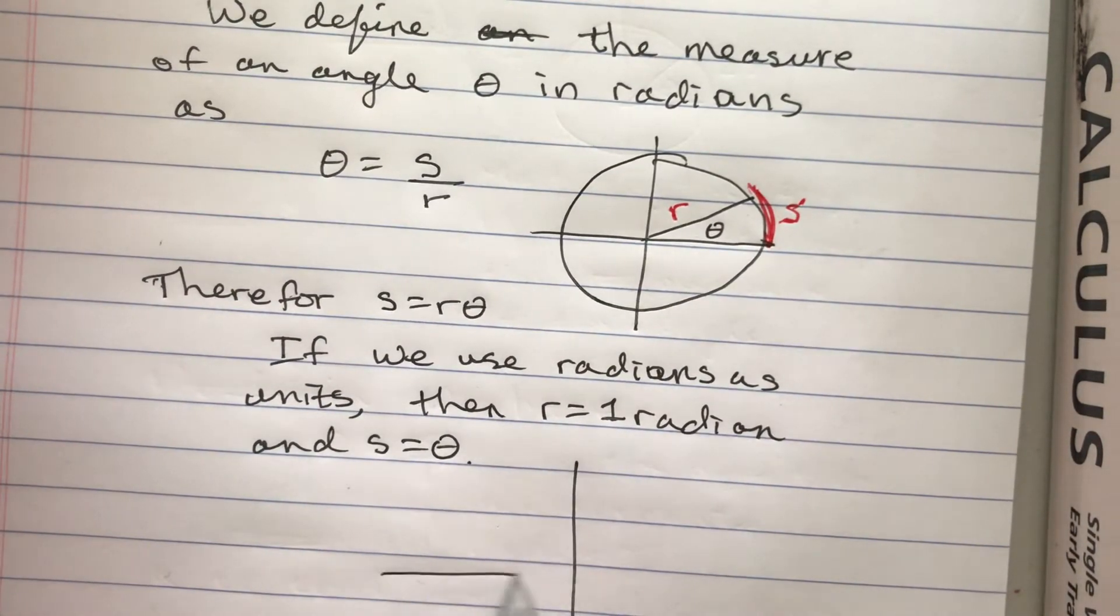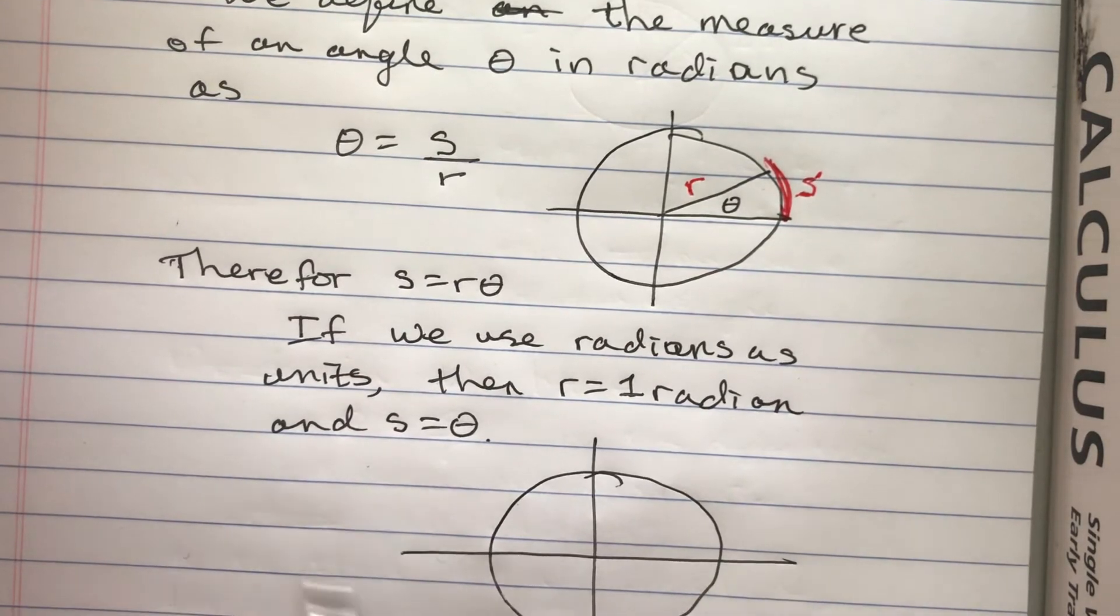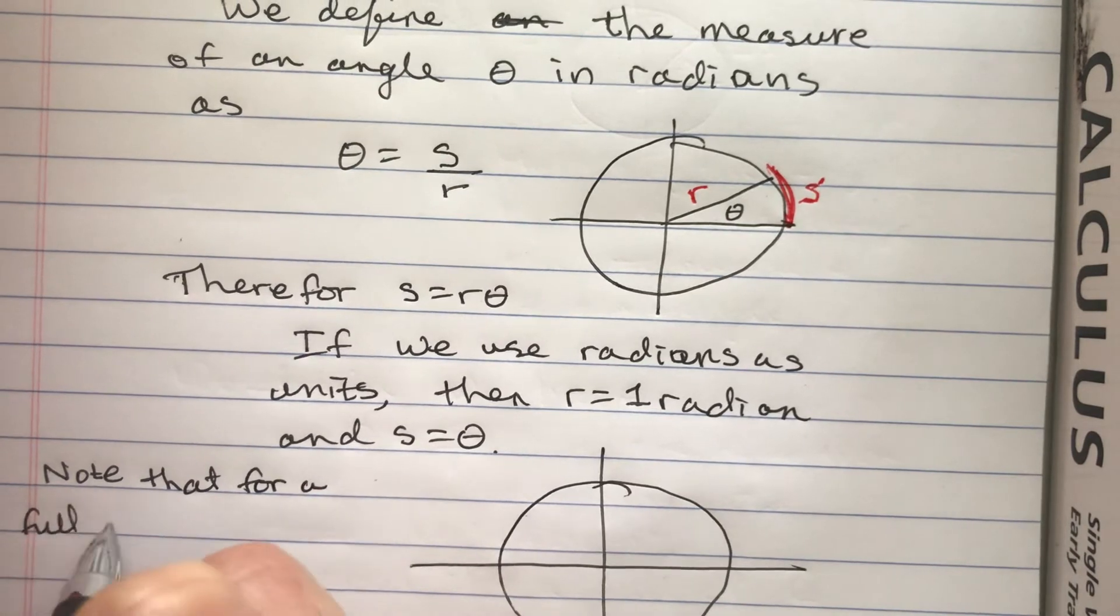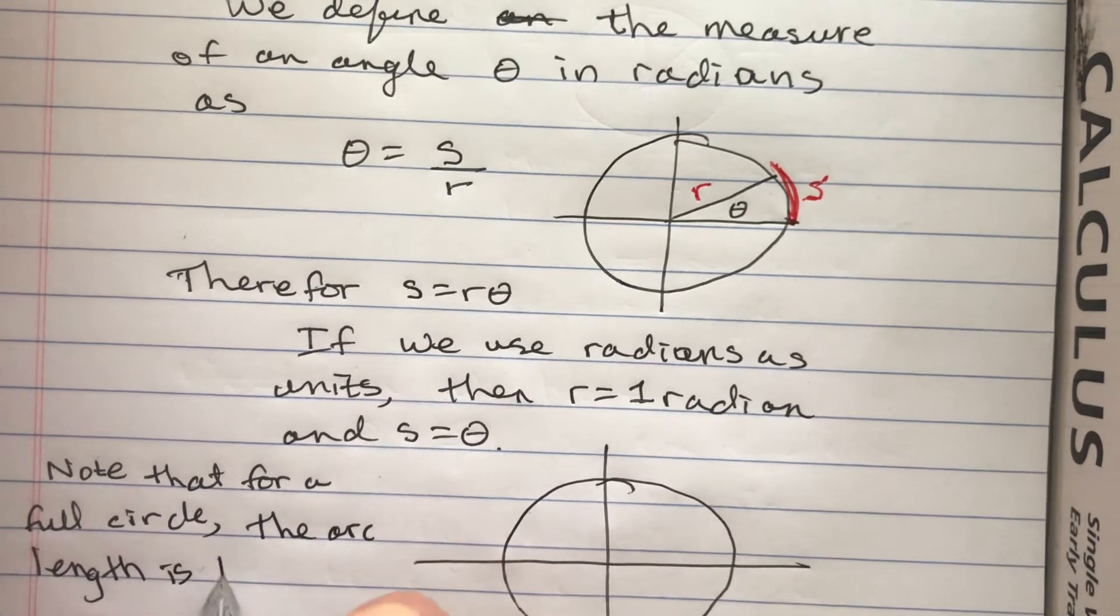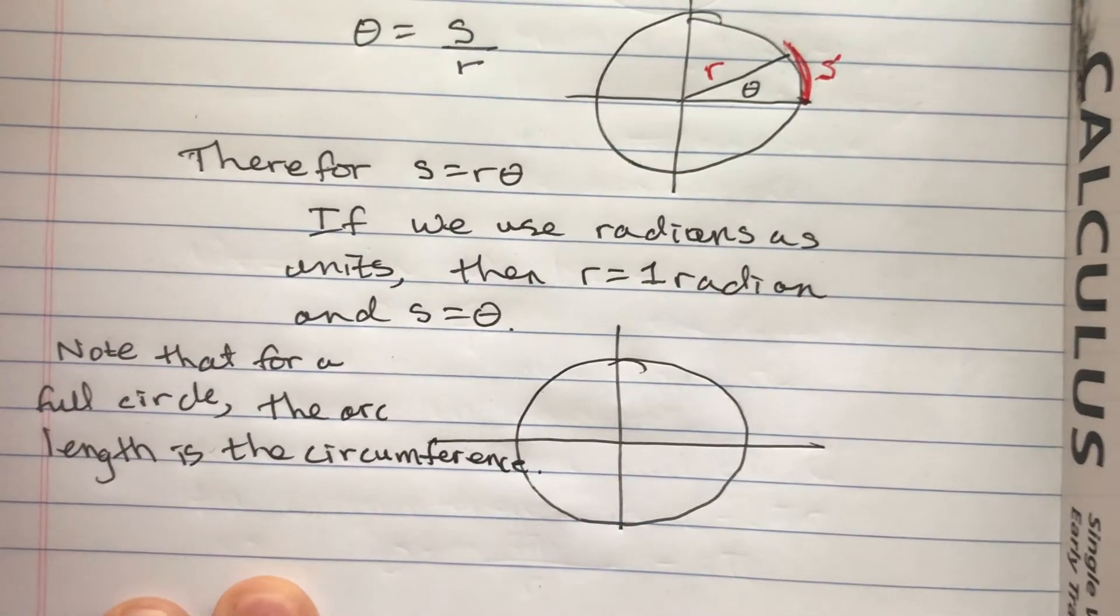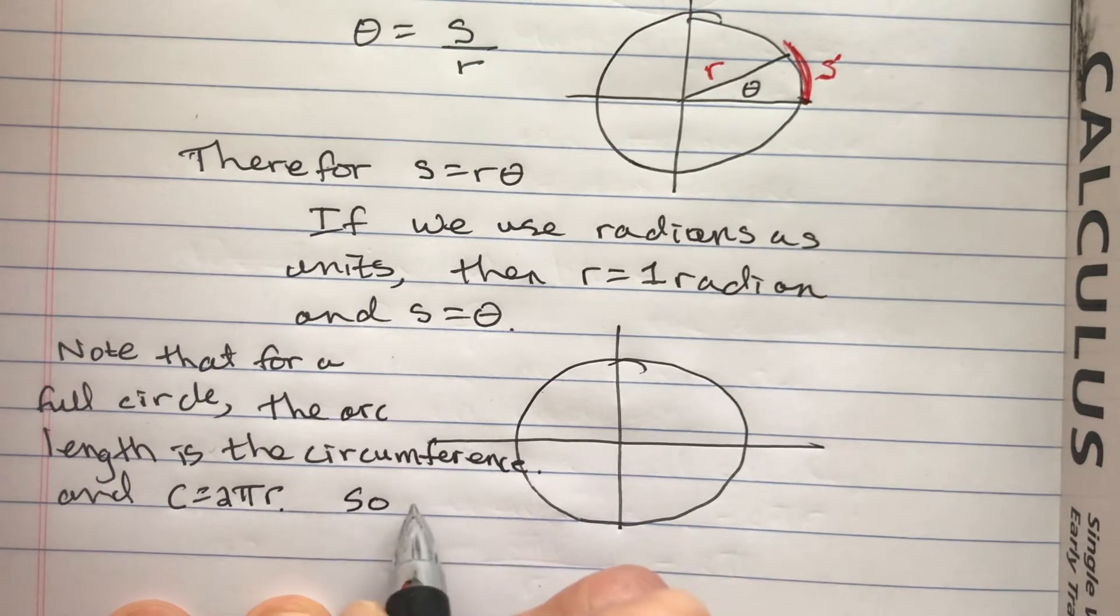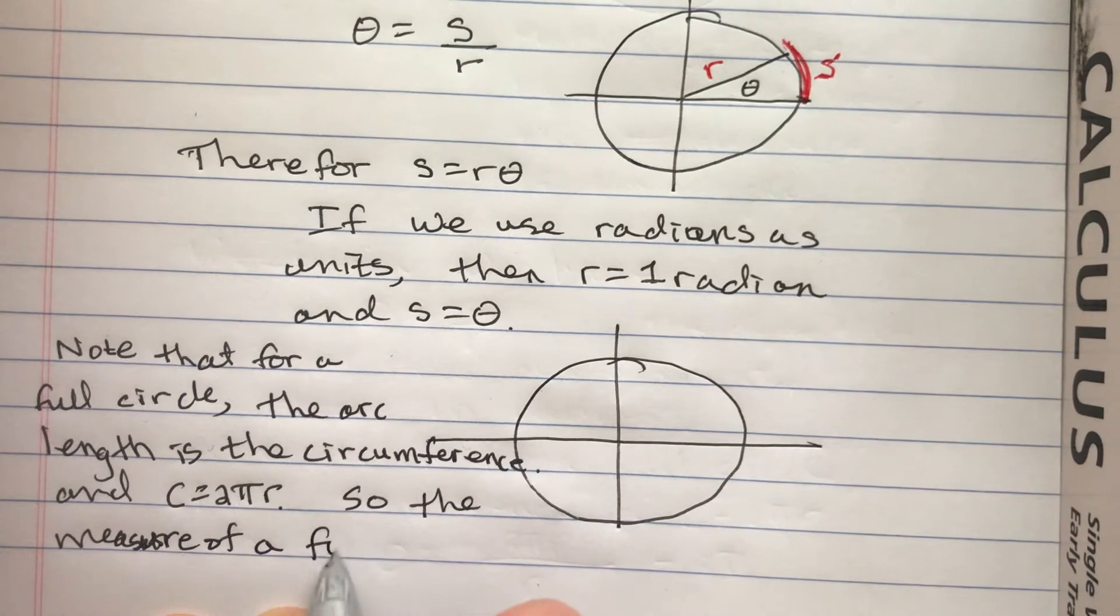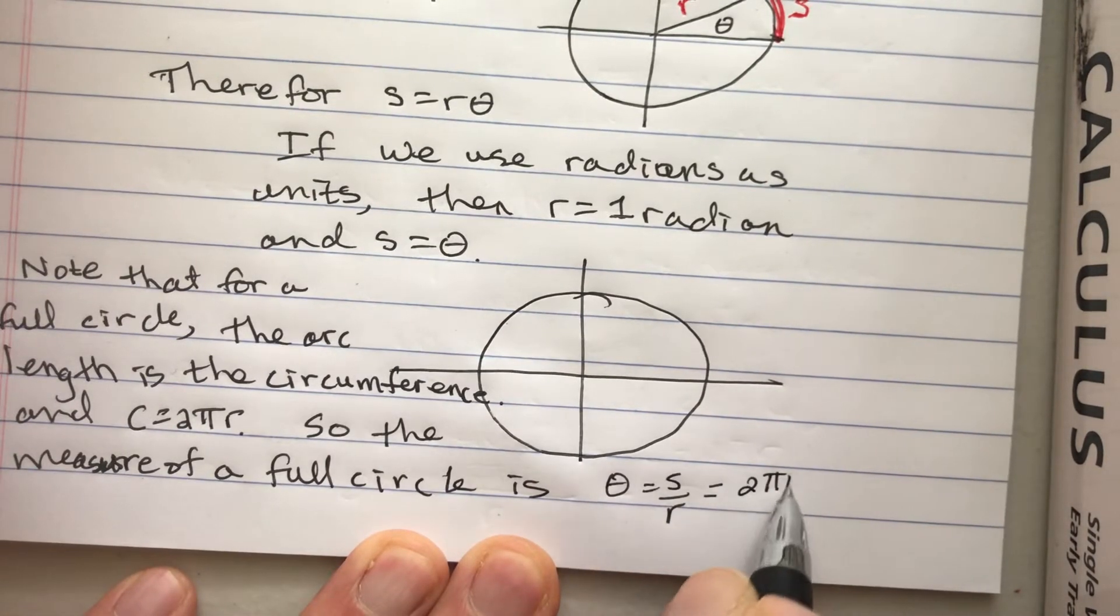Let's just see if we can get some example here. Well, maybe before I do that. Note that for a full circle, the arc length is the circumference. So for a full circle, we know that the arc length is circumference and C is equal to 2 pi R. So the measure of a full circle is theta equals S over R, which is 2 pi R over R, which is 2 pi.